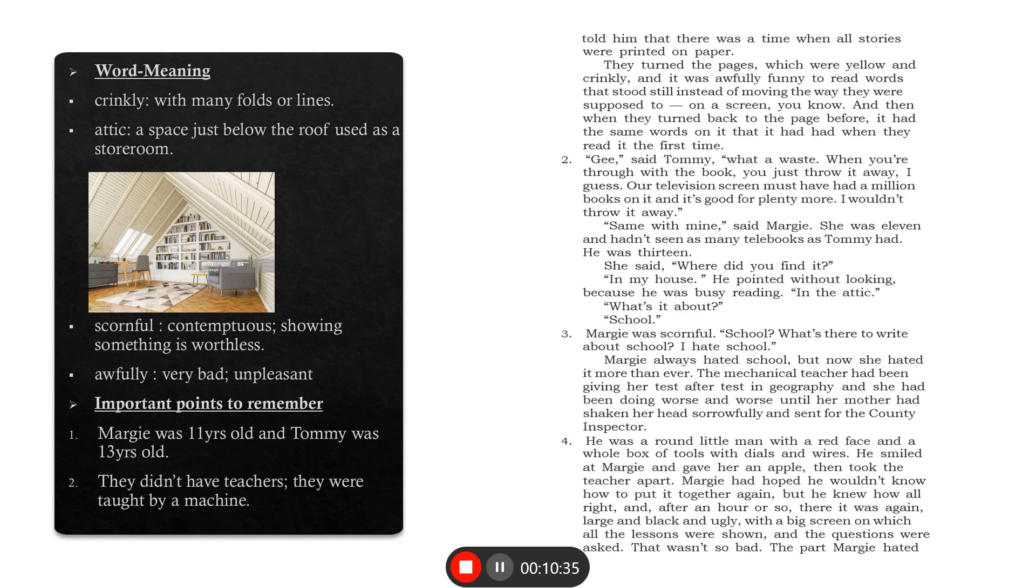Margie always hated school, but now she hated it more than ever. The mechanical teacher had been giving her test after test in geography, and she had been doing worse and worse, until her mother had shaken her head sorrowfully. In school, if you are not performing well in one test, second test, third test, then what will be done? Either your parents turn up to the school or the teacher turns up to the parents. And then things are sorted. But in the era where Margie belongs, what happens? The mechanical teacher's functioning has been affected by something or the other. And as a result, the mechanical teacher is giving test after test in geography. And since she is getting test and test again and again, so her performance is going down.